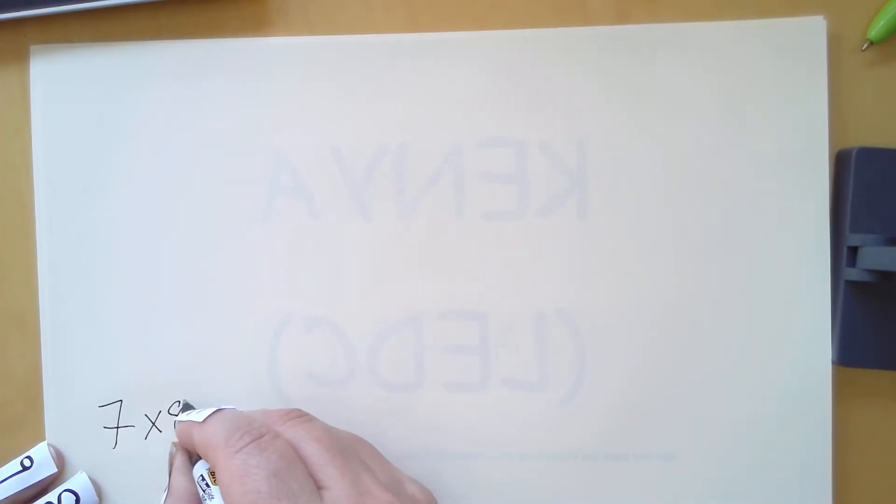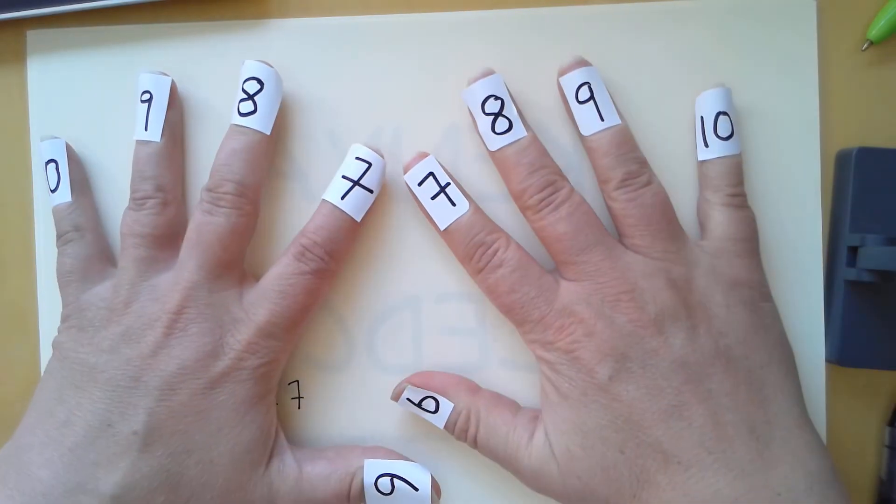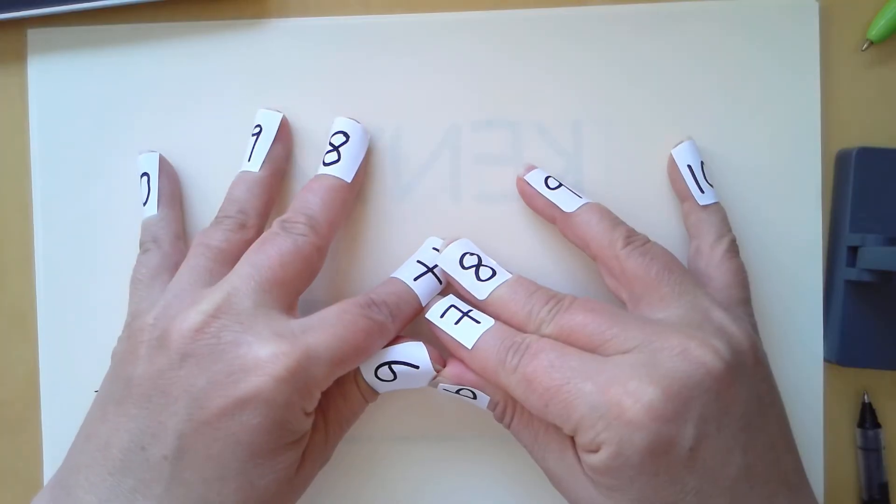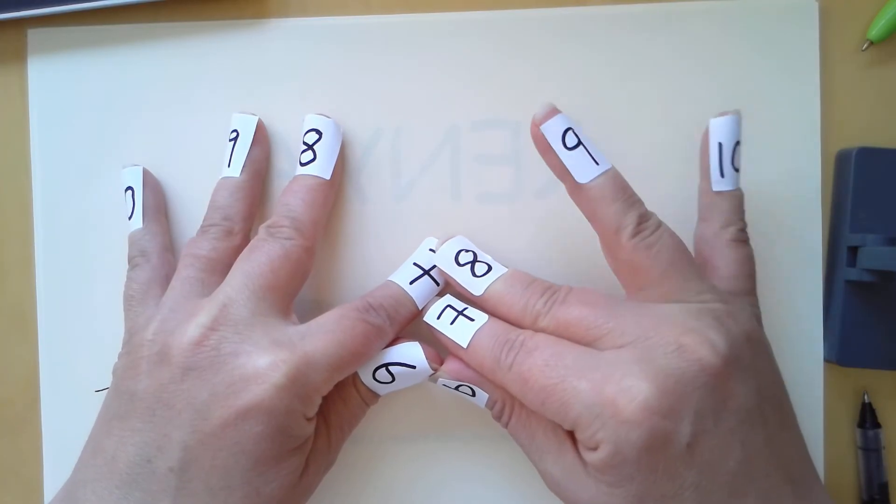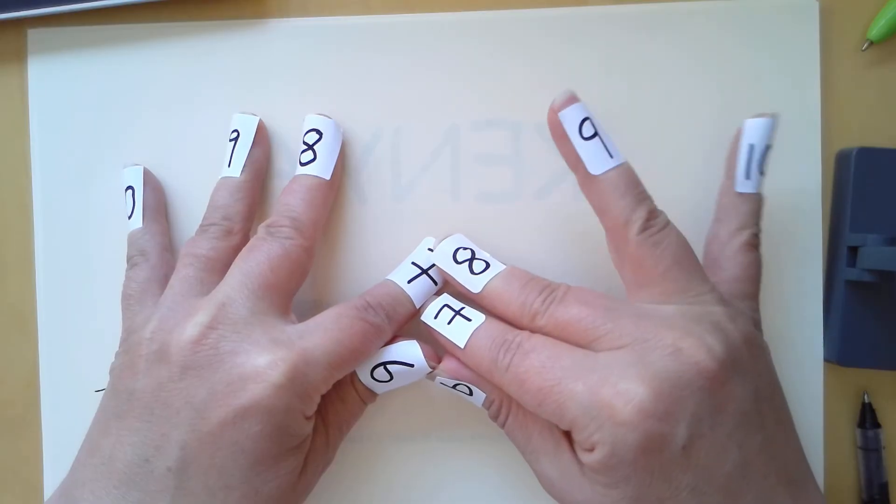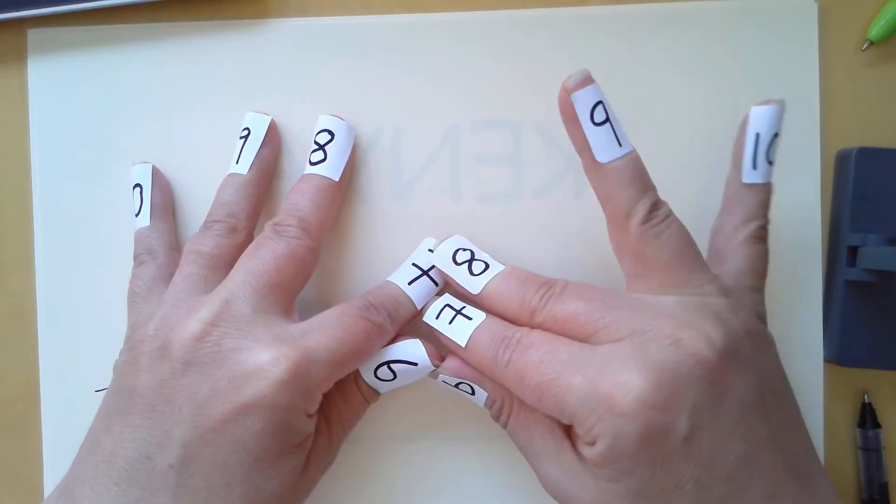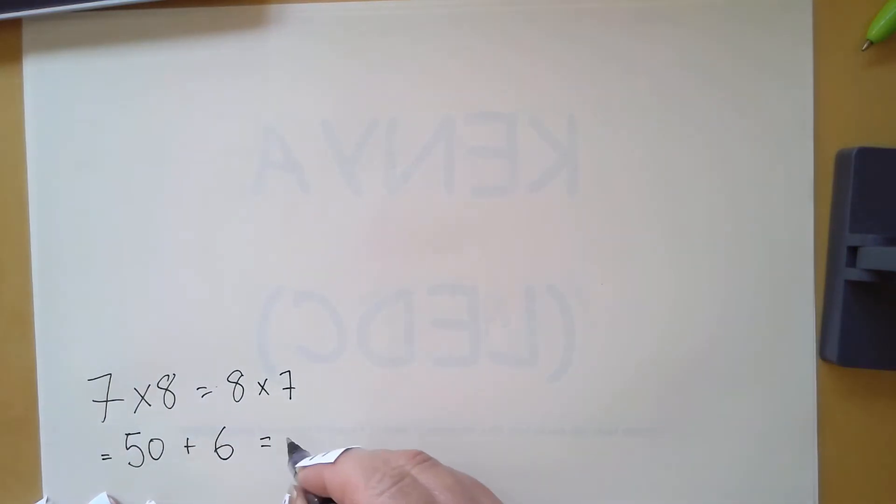Seven multiplied by eight equals - we start with fifty. We've got our fifty, and then what do we have? Well, we have three here and two here. We take the three and multiply it by the two fingers. Three multiplied by two is six, so we get fifty-six.